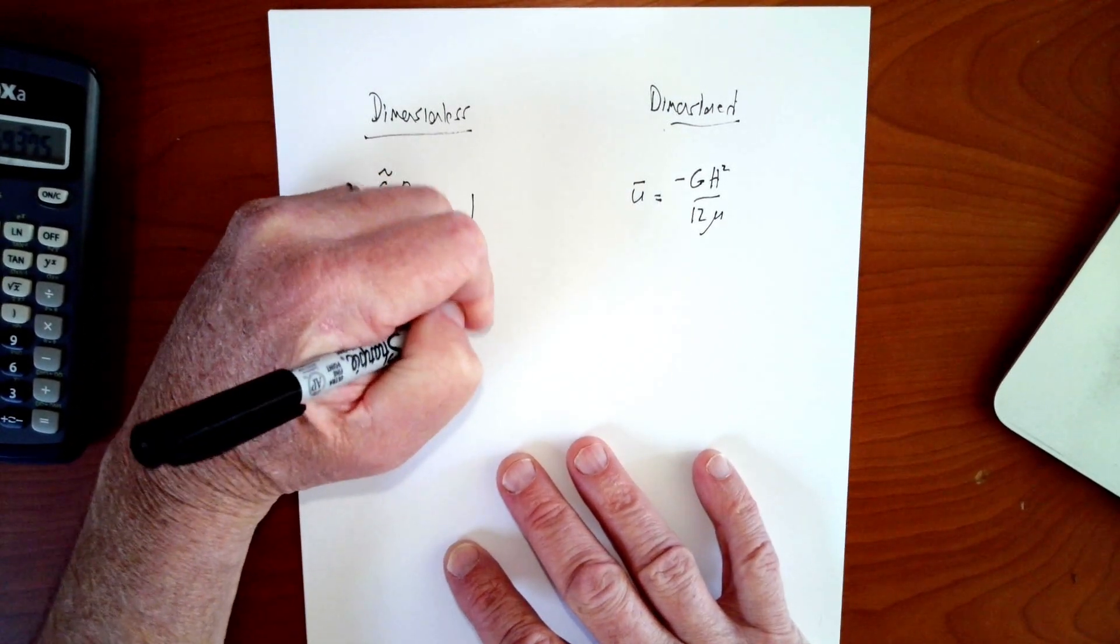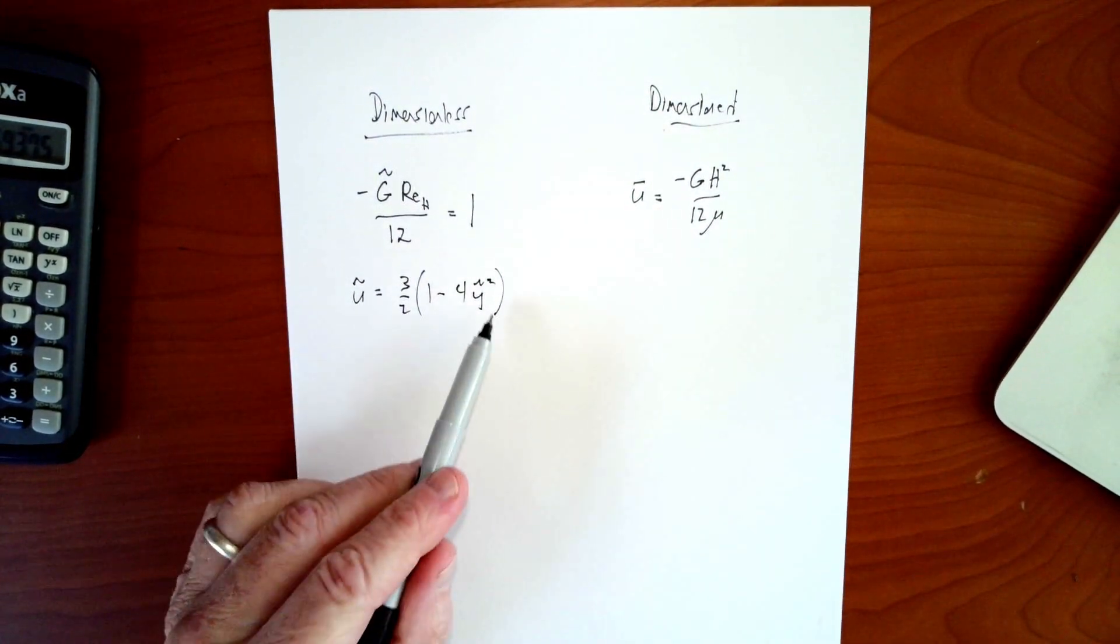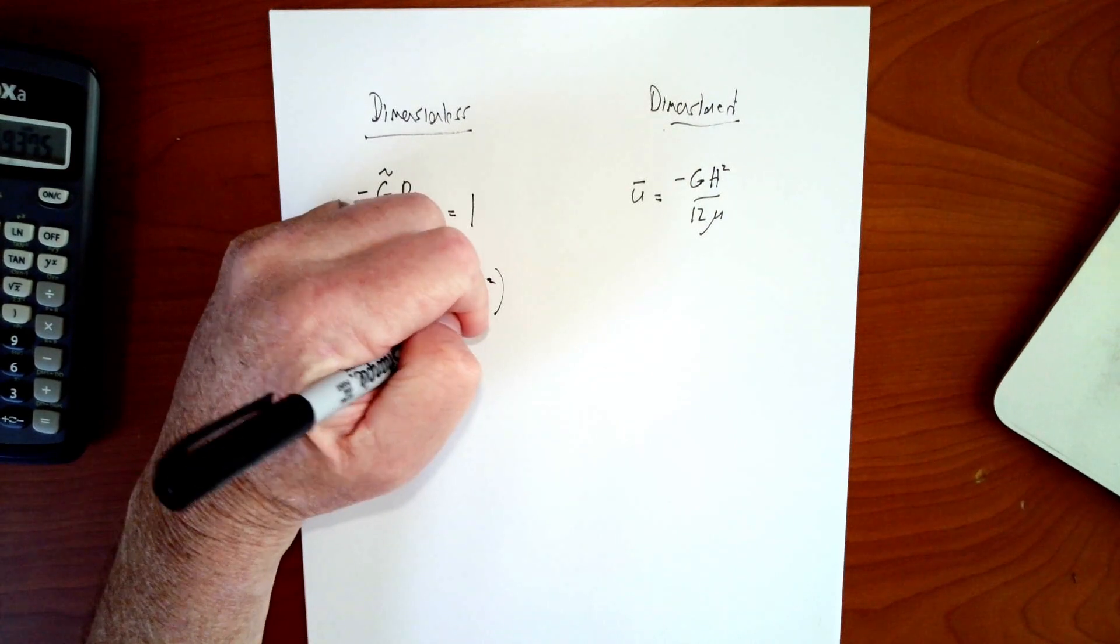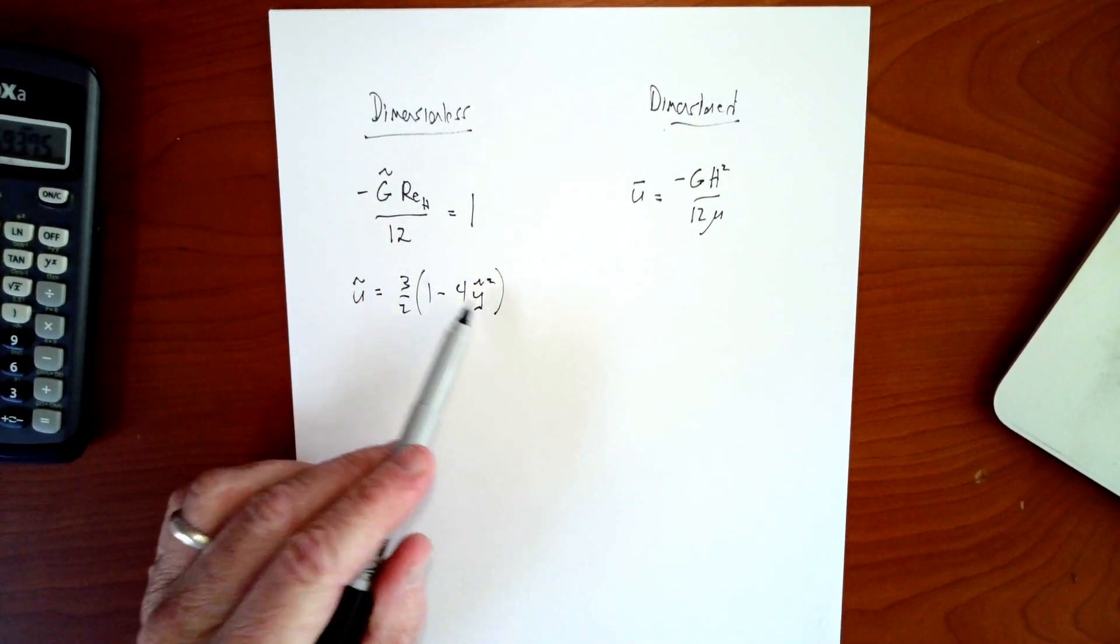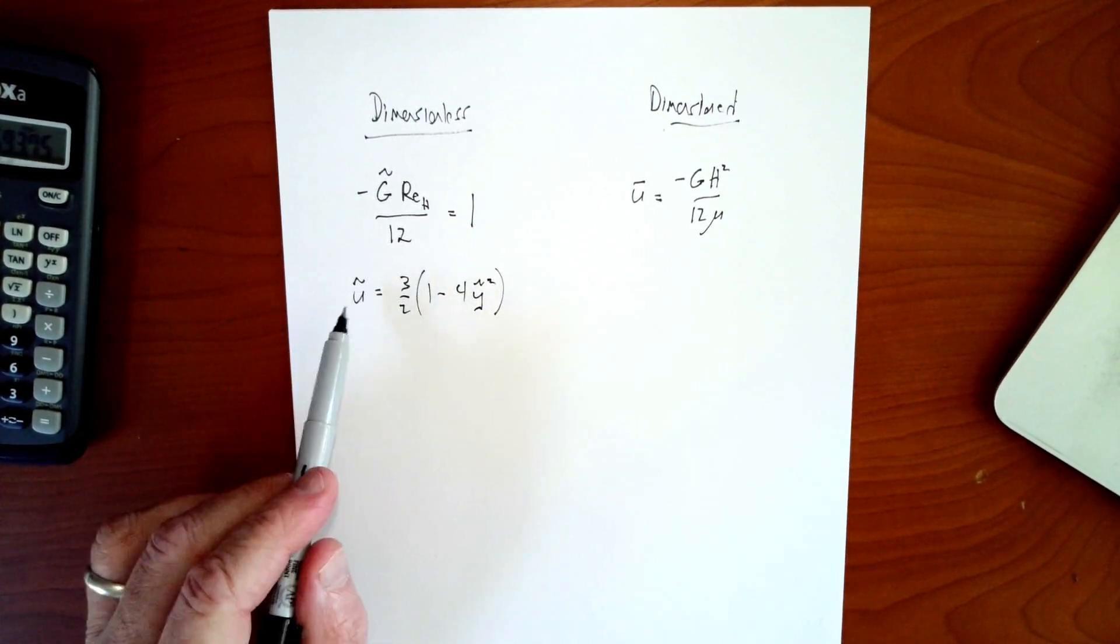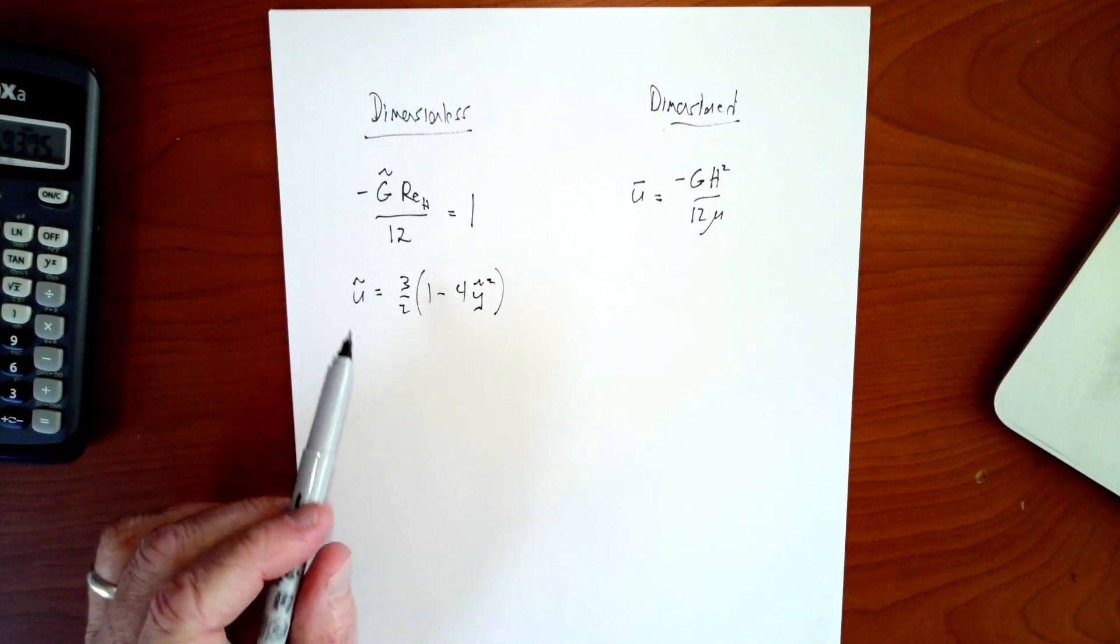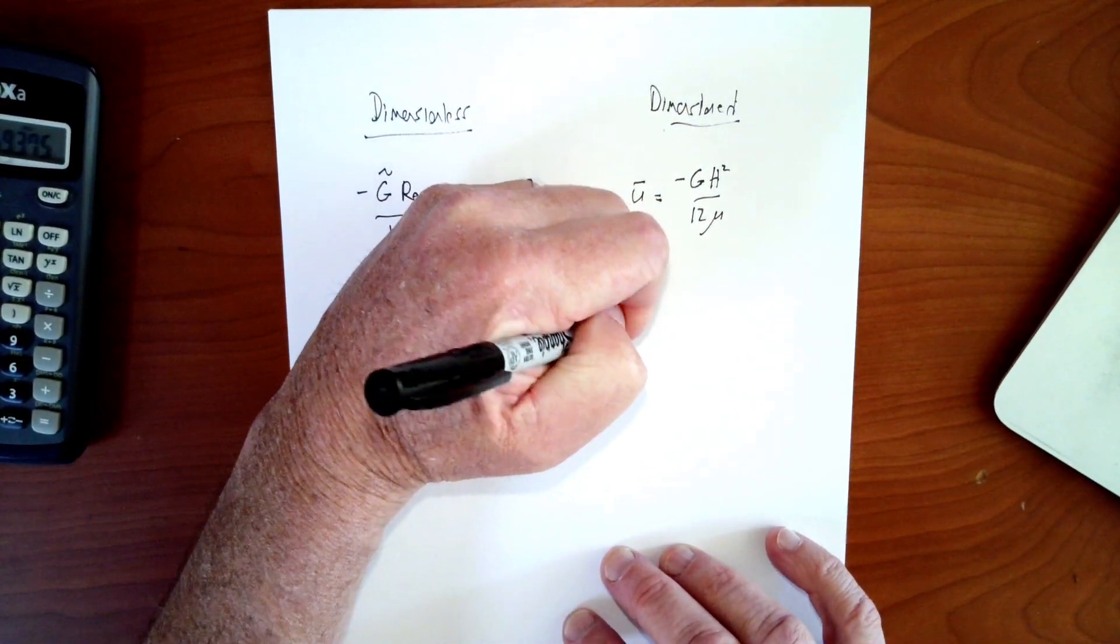The second relationships we came up with were for how you actually find the velocity at a particular point in the flow. In the dimensionless world, this is the equation that does that. It has nothing in it except the dimensionless y variable. There's no other term in it. If you want to find the actual velocity at a particular point, all you need is the dimensionless y to understand the dimensionless quantity here.